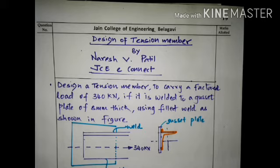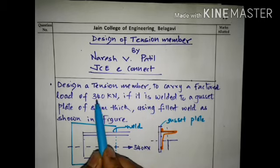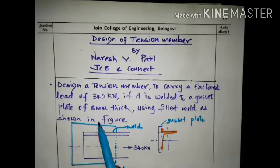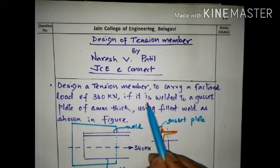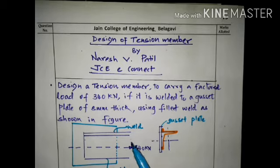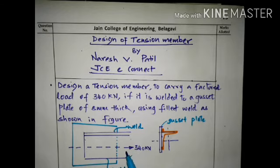I will read out the problem statement. Design a tension member to carry a factored load of 340 kilo Newton if it is welded to a gusset plate of 8 mm thick using fillet weld as shown in the figure. Looking at the sketch, this is the angle connected to the gusset plate, and we have to design a weld along the member. The member is carrying a force of 340 kilo Newton.